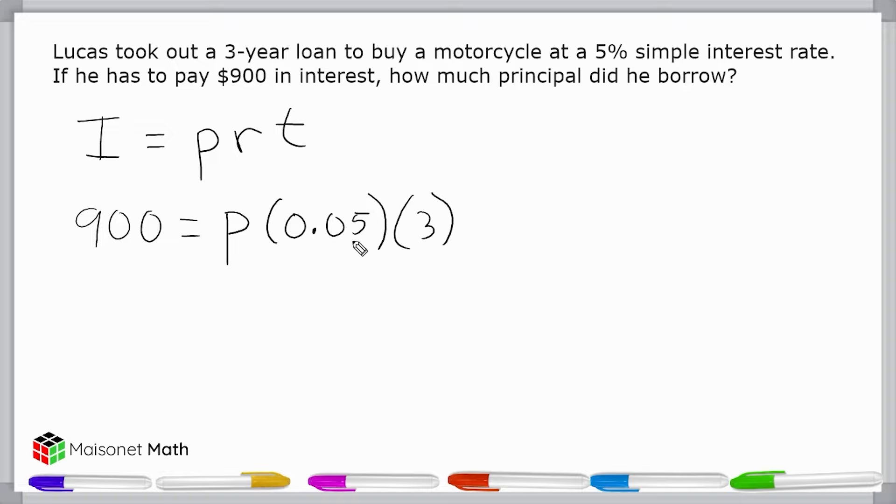Next we're going to simplify our equation. We're going to rewrite this as 900 equals, we're going to multiply these values first. Three times 0.05 is 0.15, and then we're going to multiply that product by P.